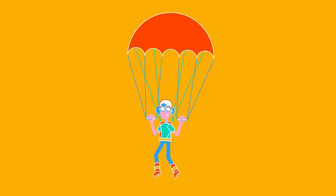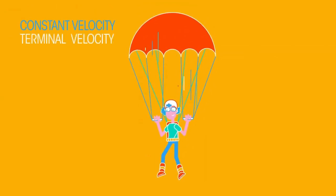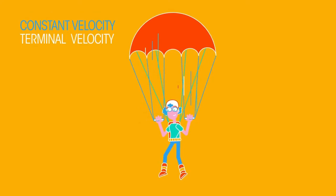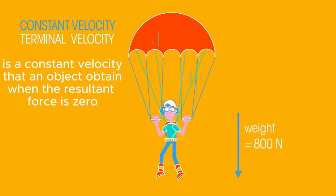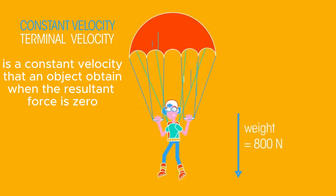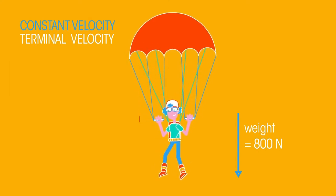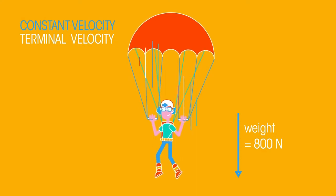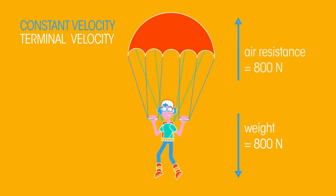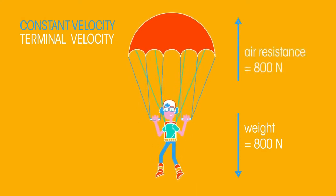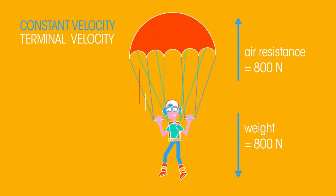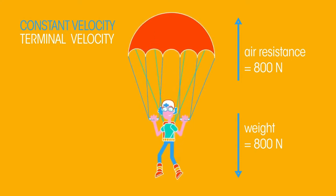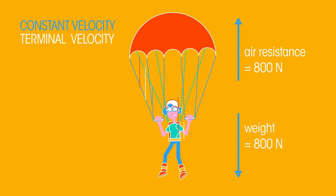For example, this parachutist is falling through the air at a constant velocity, also known as terminal velocity. There is a force of 800 newtons acting downwards on the parachutist. This is the parachutist's weight or the force due to gravity. At the same time, the parachutist experiences an upward force of 800 newtons due to air resistance. These forces are balanced, so she will be falling at a constant velocity.